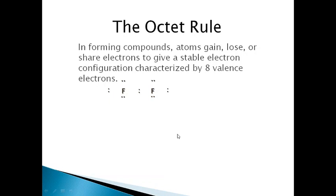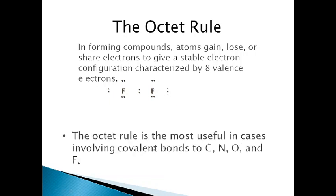Next, the octet rule. Before hybridization, we will see the Lewis structure, the octet rule, VSEPR theory, and valence bond theory. Then we will go for types of bonding and further proceed to the hybridization term. The octet rule states: in forming compounds, atoms gain, lose, or share electrons to give a stable electron configuration characterized by 8 valence electrons.